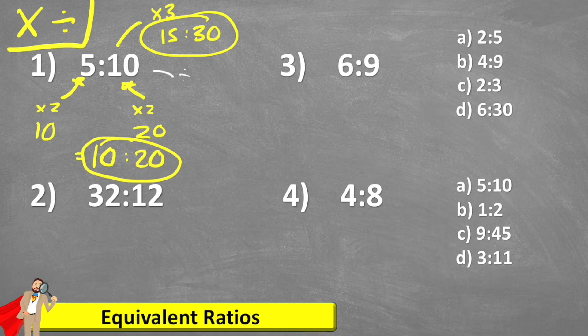So I could divide both of these by five. Five divided by five is one. And 10 divided by five is two. So one to two is also an equivalent ratio. And actually, one to two is also the simplified ratio, because that's it in its smallest form.